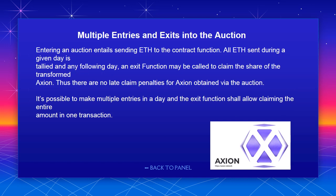Multiple entries and exits into the auction: entering an auction entails sending ETH to the contract function. All ETH sent during a given day is tallied, and the following day an exit function may be called to claim a share of the transformed Axion. Thus there are no late claim penalties for Axion obtained via the auction. It's possible to make multiple entries in a day, and the exit function allows claiming the entire amount in one transaction.